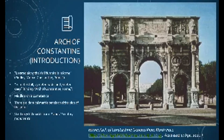There are three arches, with the middle arch being 12 meters high. There are identical inscribed marble panels in the center on each side of the arch that read: 'To the Emperor Caesar Flavius Constantinus, the Greatest, Pious, Fortunate, the Senate and People of Rome. By inspiration of divinity and his own great mind, with his righteous arms on both the tyrant and his faction in one instant in rightful battle, he avenged the Republic. Dedicated this arch as a memorial to his military victory.'